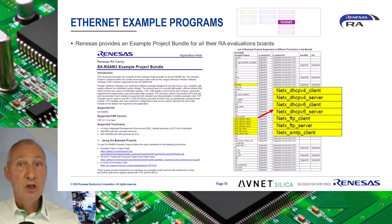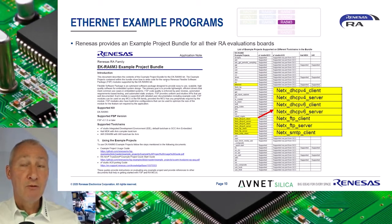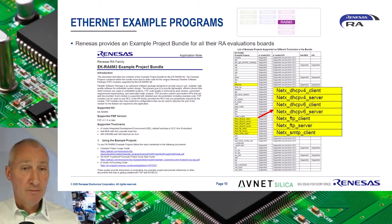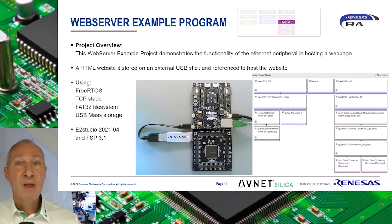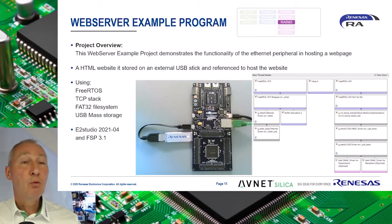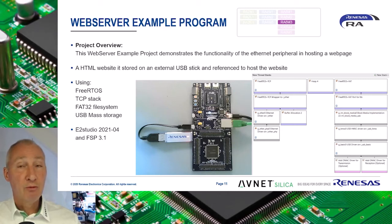Renesas provides an example project bundle for all of their RA evaluation boards. These demonstrate most of the peripherals on the device. The Ethernet peripheral is also included. There are eight versions covering both client and server in IPv4 and IPv6 modes. In addition, Renesas has provided me with a web server example project. The Ethernet web server example project for the EK-RA6M3 evaluation board demonstrates the functionality of the Ethernet peripheral in hosting a web page. An HTML website is stored on an external USB stick and referenced to host the website, making it easy to modify and deploy an updated website. I will now demonstrate this project.